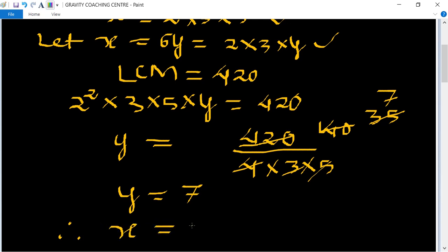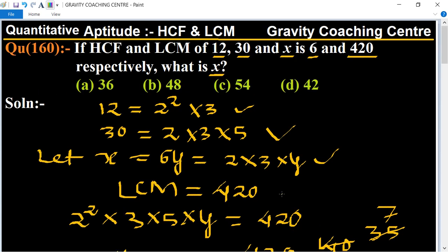Therefore, x = 6y = 6 × 7 = 42, which is the required answer. So option D is the right answer.